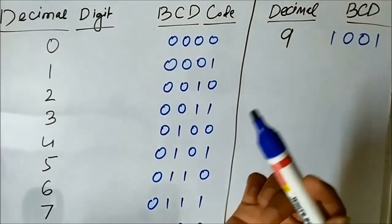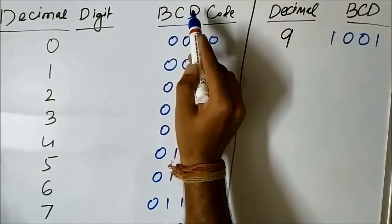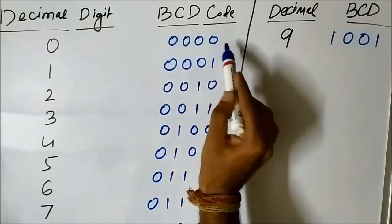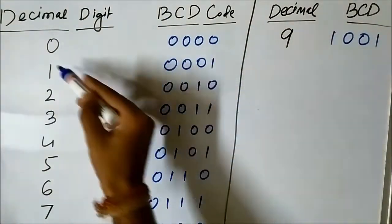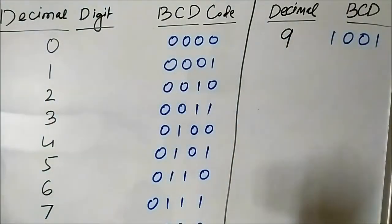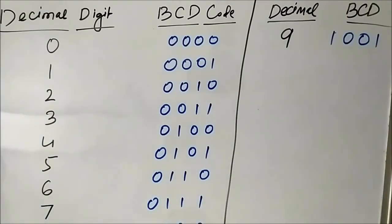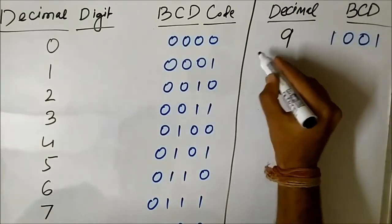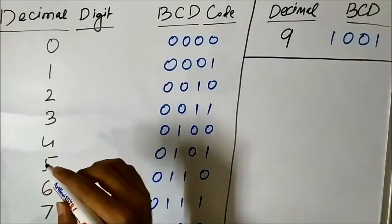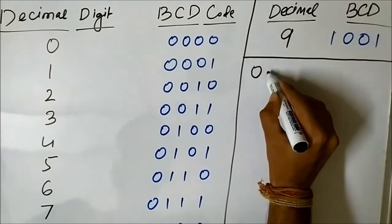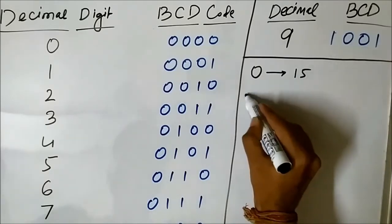The name itself says the definition — the decimal digits are coded using binary coding technique. Here 4-bit binary codes are used to represent each of the 10 unique symbols in the decimal number system. Another important thing we should remember while using the BCD technique is that using 4 bits we can represent decimal values from 0 to 15.